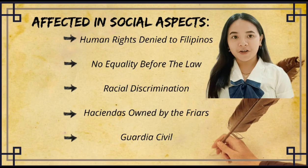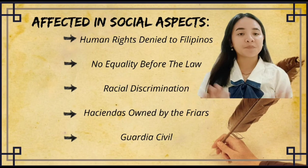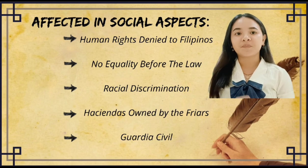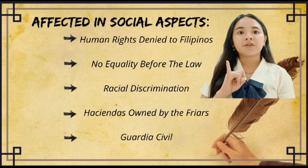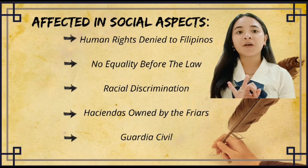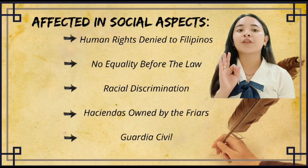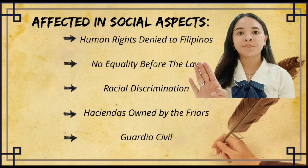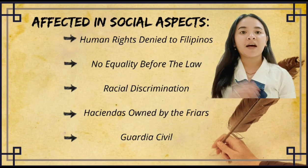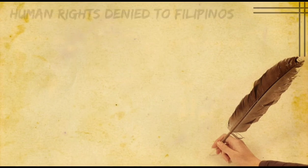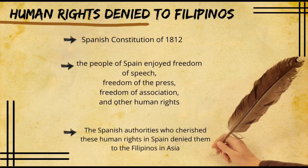Among all the things mentioned, Filipinos also experienced and were affected in social aspects by the following: first, human rights were denied to them; second, no equality before the law; third, racial discrimination; fourth, haciendas owned by the friars; and fifth, the Guardia Civil.